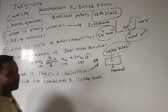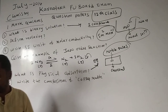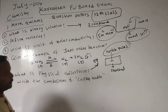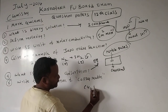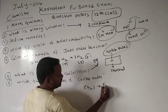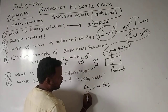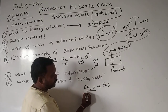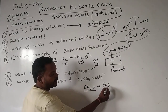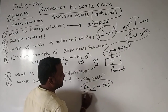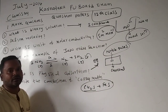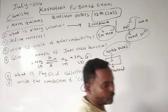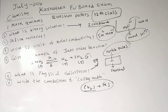Next: write the composition of copper matte. Copper matte means Cu2S (copper sulfide) plus FeS (iron sulfide). This mixture of Cu2S and FeS is called copper matte.